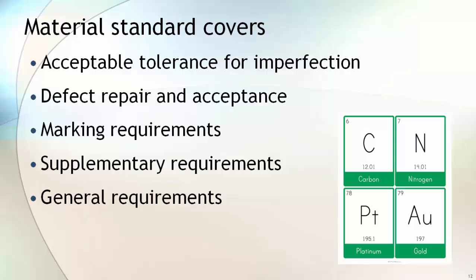Standard covers various defect repair methods and acceptance of defect repairs. Standard also gives various marking requirements. Material standard also lists various supplementary requirements — these are additional requirements mentioned within the standard that the purchaser must specify in the purchase order if they want to invoke them. Standard also gives various general requirements such as product finish, ordering information, and packaging information. Examples of material standards are ASTM sections 1, 2, and 3. ASME Section 2 also provides the various materials that can be used in ASME Section 8 code-stamped jobs.